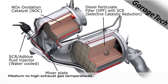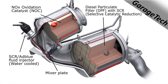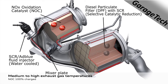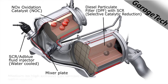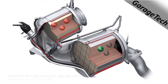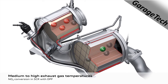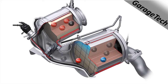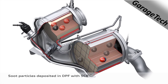At higher exhaust temperatures, more NOx is produced than the oxidation catalyst can convert. This is where the AdBlue fluid is added. The fluid reacts with the NOx emissions to further break them down into nitrogen and water. In the DPF catalyst, soot particles are stored and later burned off to ensure cleaner exhaust emissions.